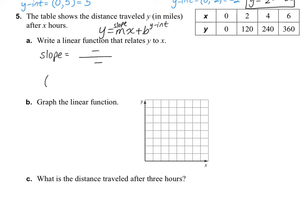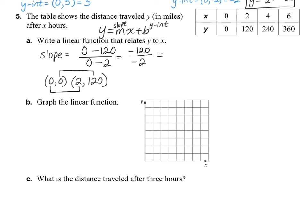I'm going to use the first two points: 0, 0 and 2, 120. Put the Y numbers on top — 0 and 120 — and the X numbers on the bottom — 0 and 2. When we simplify, we get negative 120 over negative 2, which simplifies to positive 60. Now let's find our Y-intercept: it's taken from when X equals 0, so the point 0, 0. That means my Y-intercept is 0. So my function is Y equals 60X.